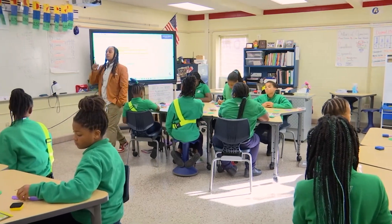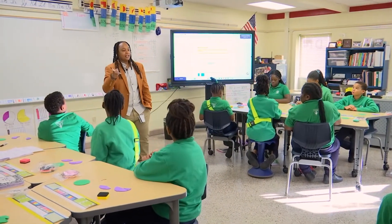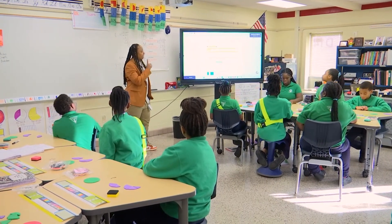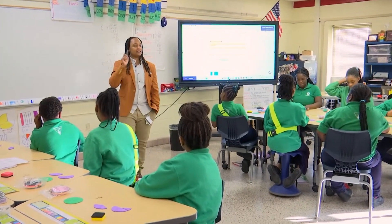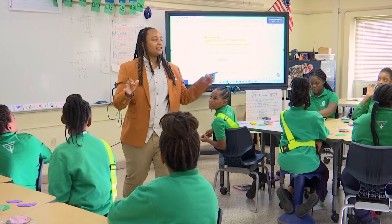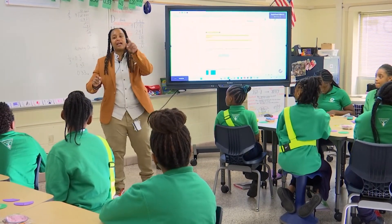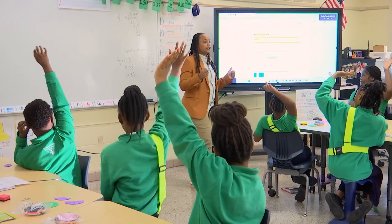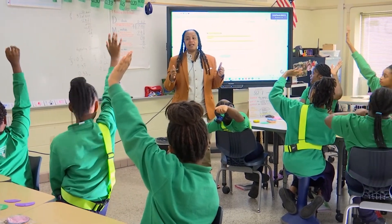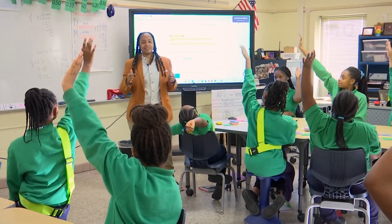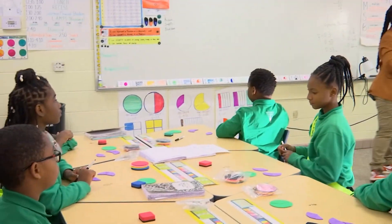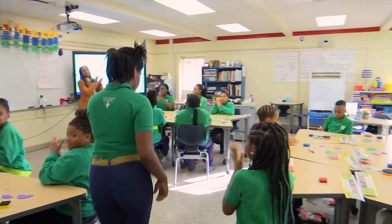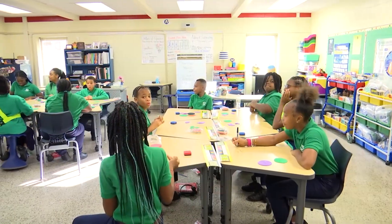So when we have a ten at the bottom, what do we think about, class? Place value. We think about place value. So if we look at this fraction, we're thinking about place value, and we can change it to a decimal using place value. Raise your hand if you could tell me what is four over ten as a decimal. Drew says 0.4. Is he correct? Yes. Good answer.